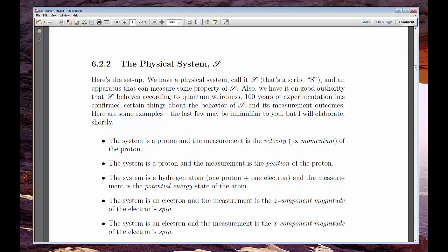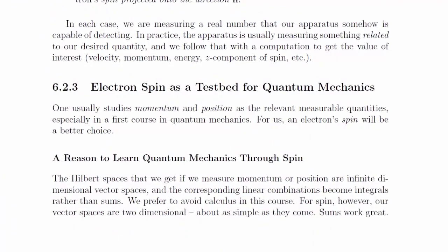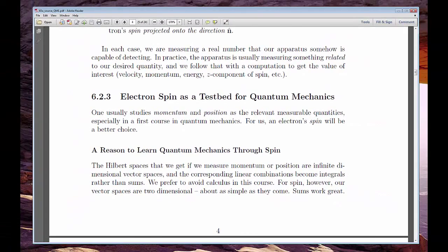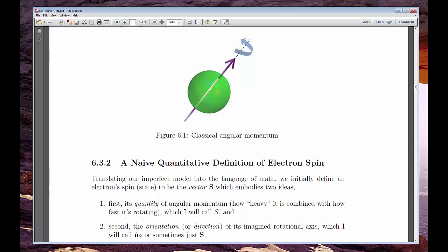We begin by describing a very special physical system: an electron with one particular property called spin. We know electrons have spin because when we shoot them through electromagnetic fields, they bend in ways that can only be explained by having this spin quality. But the details of their behavior don't match classical physics. So we'll start out imagining, naively, that electrons are tiny charged balls rotating about some axis — an incorrect but easy-to-visualize picture.